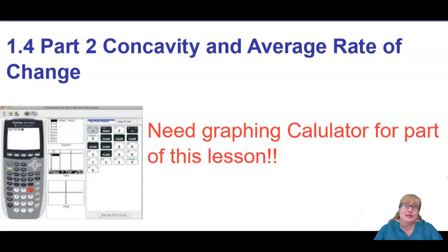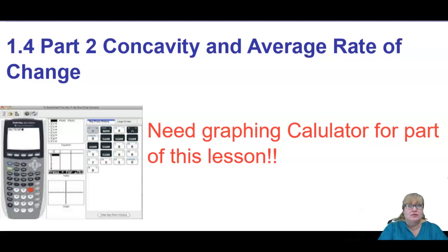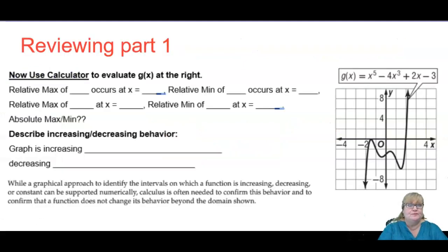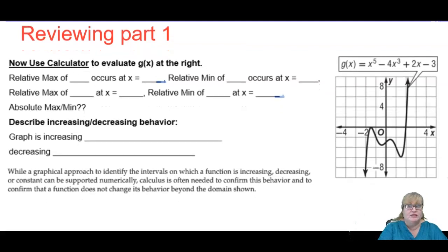Hey guys, Hofbauer back for the second half of 1.4. I forgot to tell you that the first video was only half of the lesson because I got confused and didn't have a cover sheet on that one. So that's my bad, I apologize. For this second half, we're just going to have two little concepts: concavity and average rate of change, and you will need a graphing calculator. Before we get started, though, I want to finish a couple examples that I managed to miss in the first part. It's a good review of part one.